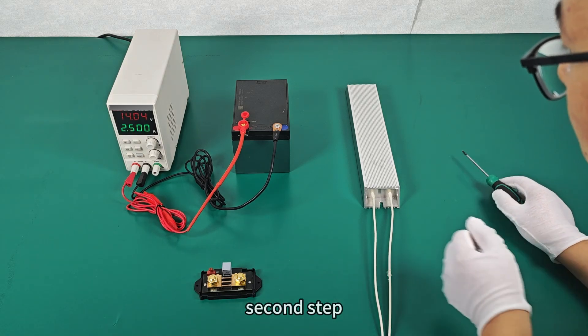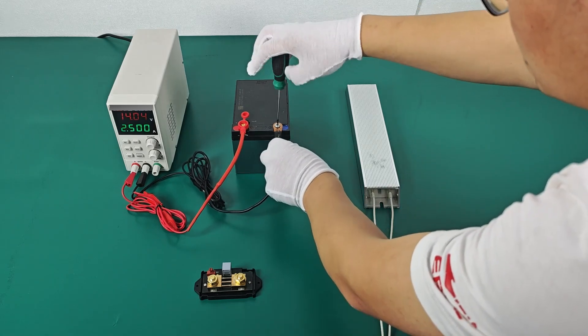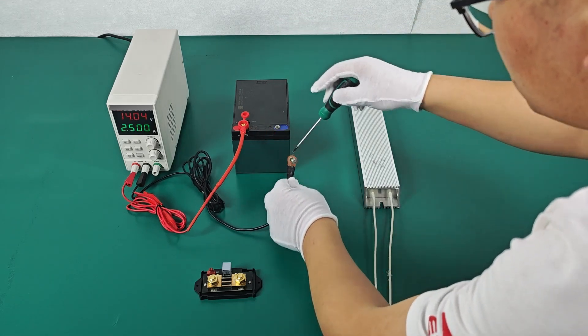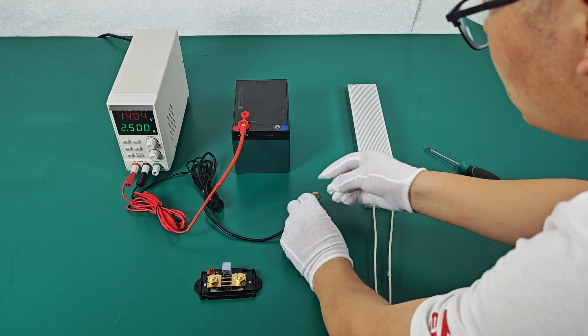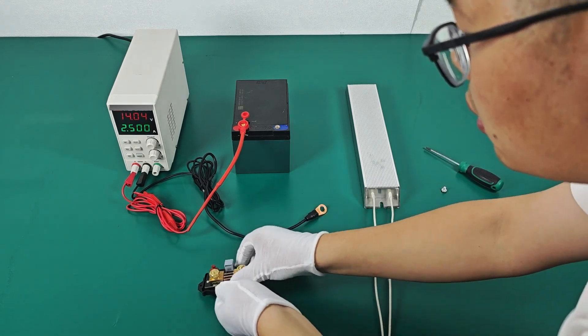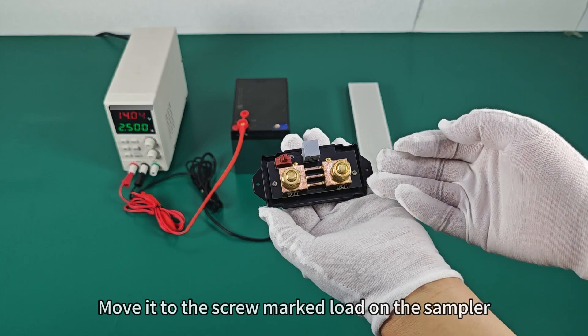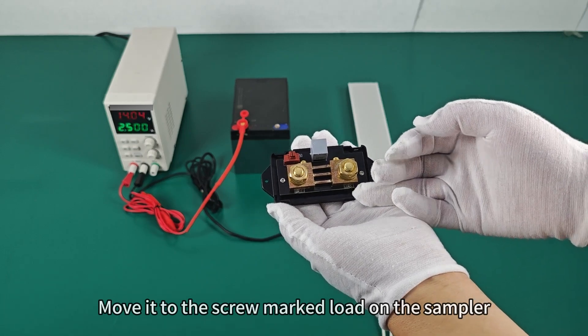Second step. Let's unscrew the battery first and move it to the screw marked load on the sampler.